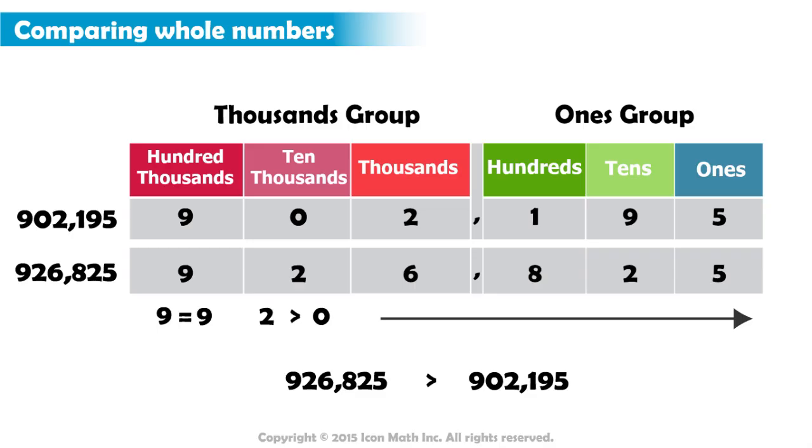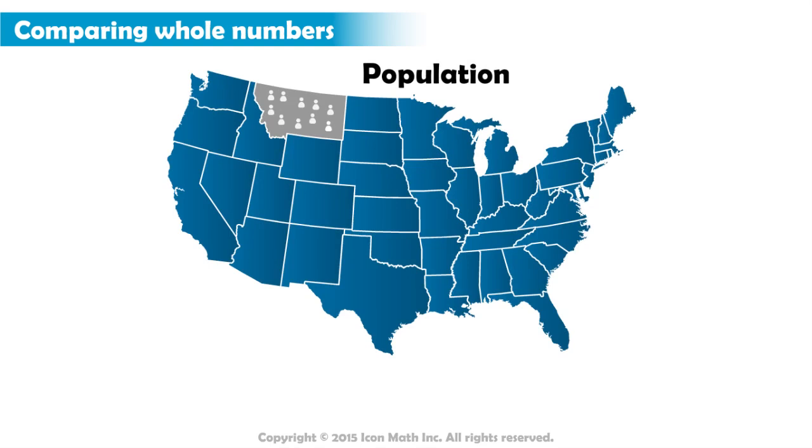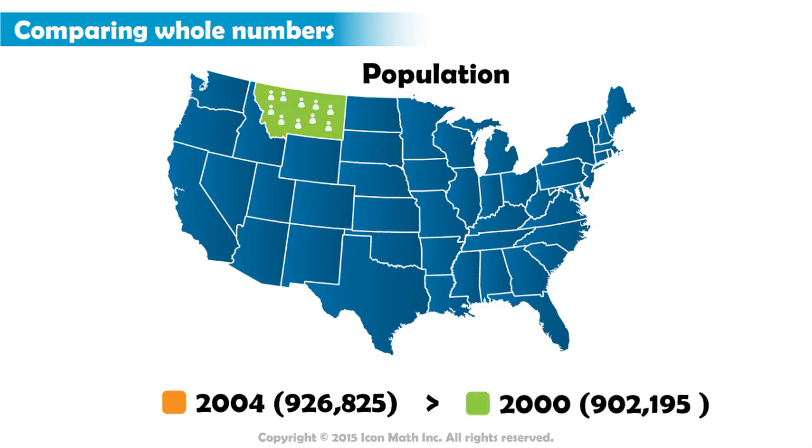Once we find a difference, we do not need to compare the remaining digits to the right. This means the population in year 2004 was greater than the population in the year 2000, and we write this conclusion using the greater than sign.